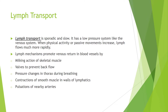Lymph transport is sporadic and slow. It has a low pressure system like the venous system. When physical activity or passive movements increase, lymph flows much more rapidly. Lymph mechanisms promote venous return in blood vessels by milking action of skeletal muscle, valves to prevent backflow, pressure changes in the thorax during breathing, contractions of smooth muscle in walls of lymphatics, and pulsations of nearby arteries.